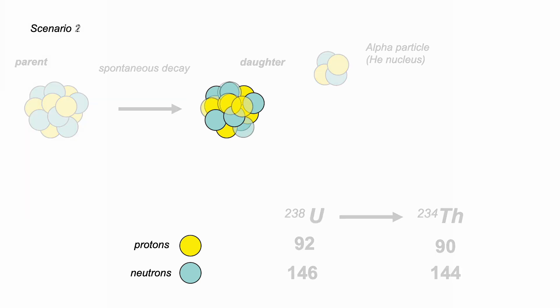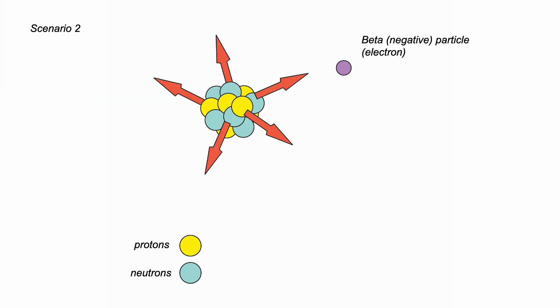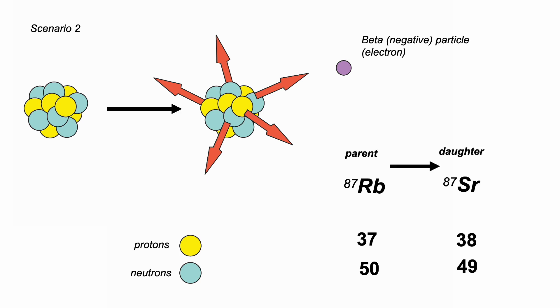Now, for another decay scenario. Here, the nucleus decays to emit a beta particle, an electron, which means a neutron becomes a proton, moving the isotope one place up the periodic table. 87 rubidium, atomic number 37, decays to 87 strontium, atomic number 38. We'll use this system as our dating tool later in this film.